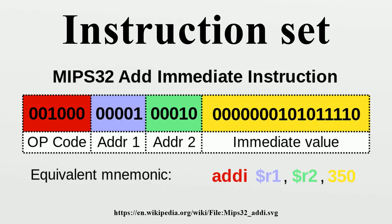Instruction set architecture is distinguished from the microarchitecture, which is the set of processor design techniques used to implement the instruction set. Computers with different microarchitectures can share a common instruction set. For example, the Intel Pentium and the AMD Athlon implement nearly identical versions of the x86 instruction set, but have radically different internal designs.